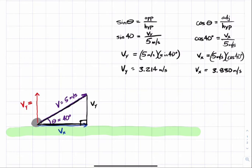Remember, there's another way you can determine the lengths of the sides of a right triangle that's also useful in this case. Let's use Pythagorean's theorem just to verify that we've done this correctly. We know that Vy equals 3.214 meters per second, and Vx is 3.830 meters per second.